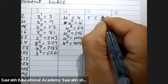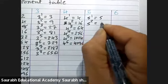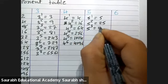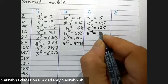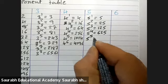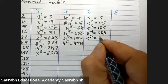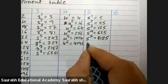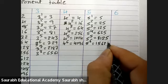Next, 5 raise to 1 is 5, 5 raise to 2 is 25, 5 raise to 3 is 125, 5 raise to 4 is 625, 5 raise to 5 is 3125, 5 raise to 6 is 15625.